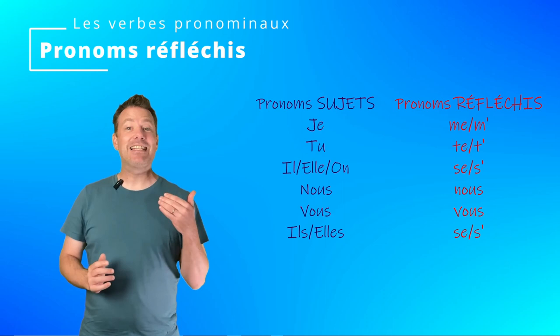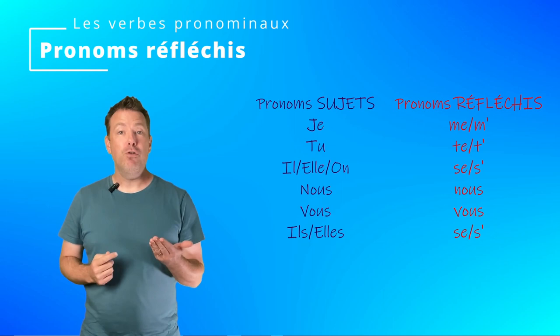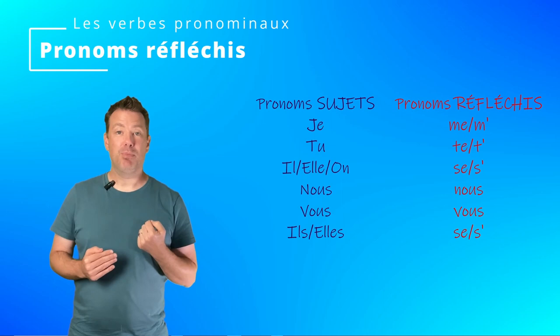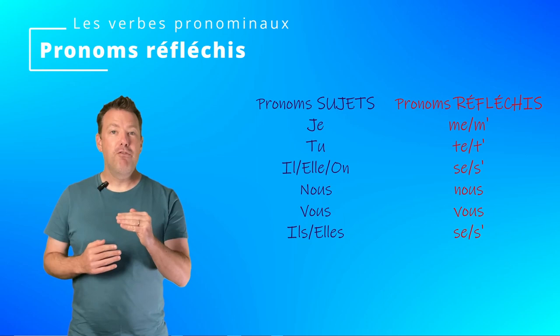Here are listed the reflexive pronouns in correspondence to the subject pronouns: me, te, se, nous, vous, se. Be careful when the verb starts with a vowel — you will need to do the elision: me into m'apostrophe, t'apostrophe, s'apostrophe, nous, vous, and s'apostrophe. As you can see, the nous and vous form of the reflexive pronouns are the same as for the subject pronouns.